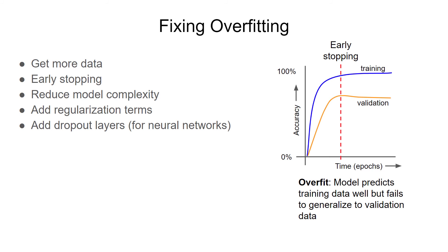Often, the more complex a model is, the more it tends to overfit the data. As a result, you could try using a less complex model, such as by removing layers or nodes in a neural network. Regularization is a technique that attempts to address overfitting by penalizing the loss function for more complex models, so the model will attempt to fit the data using the least complexity possible. By default, Edge Impulse adds L1 regularization terms to our basic neural network, so you do not need to add them manually, but you can try adjusting them to see how it affects things.